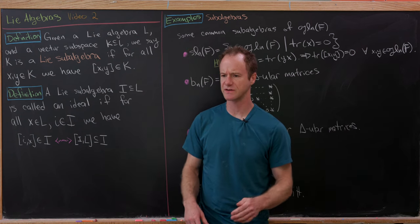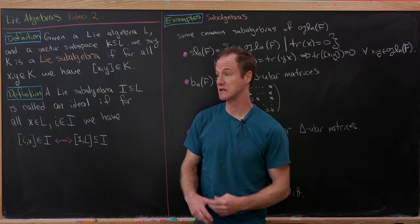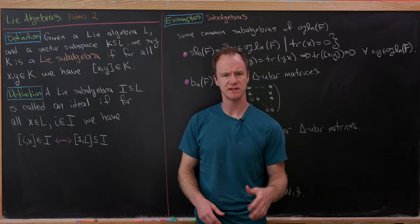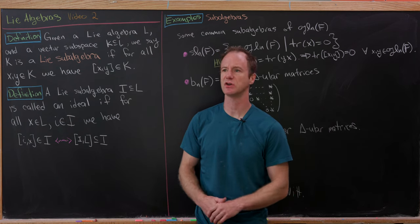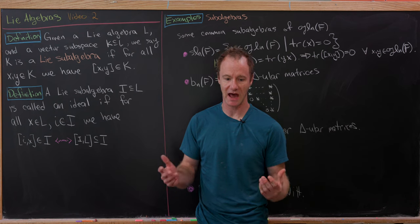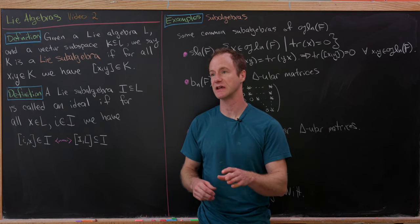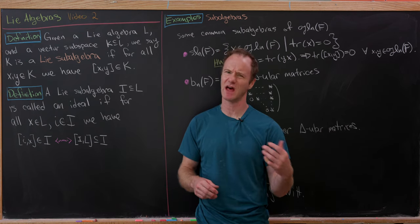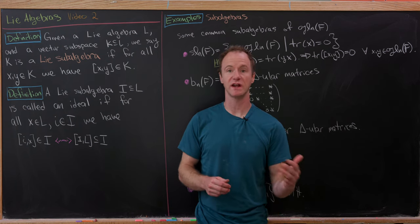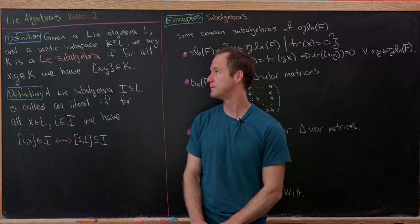This is the second video in a series devoted to the elementary study of Lie algebras. Previously we looked at definitions and a bunch of examples, and now we're going to look at some common algebraic structures that Lie algebras have, in parallel with rings and groups and other things that you're more familiar with.